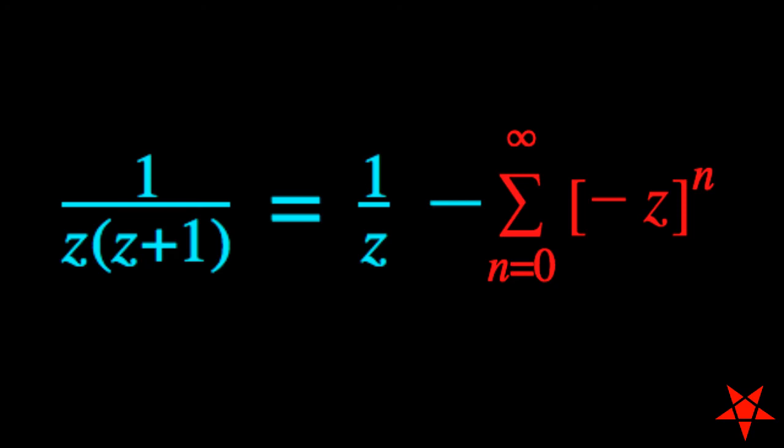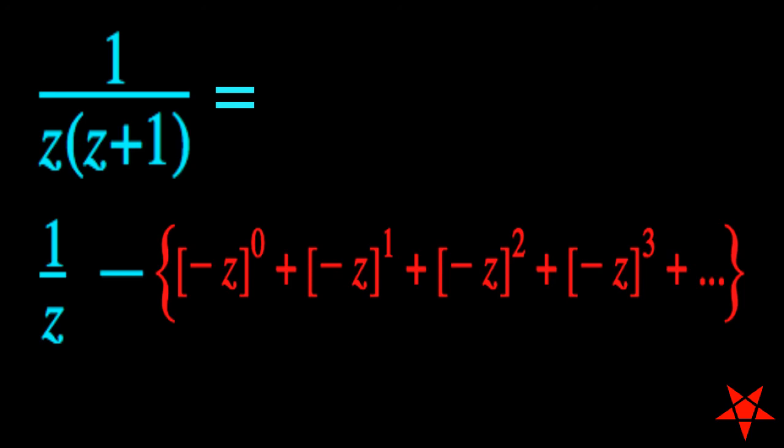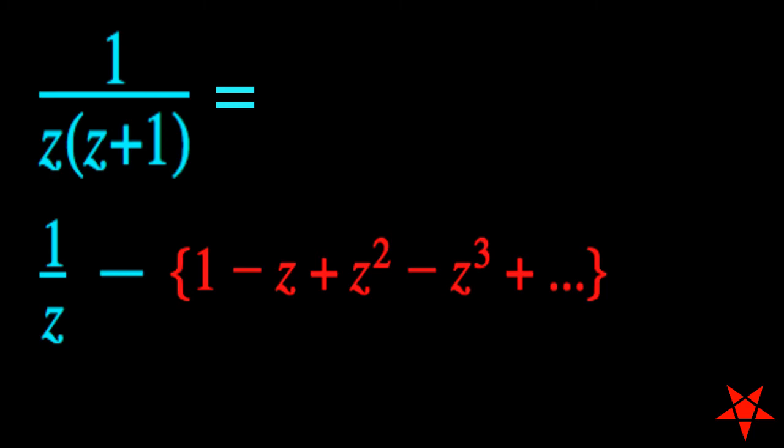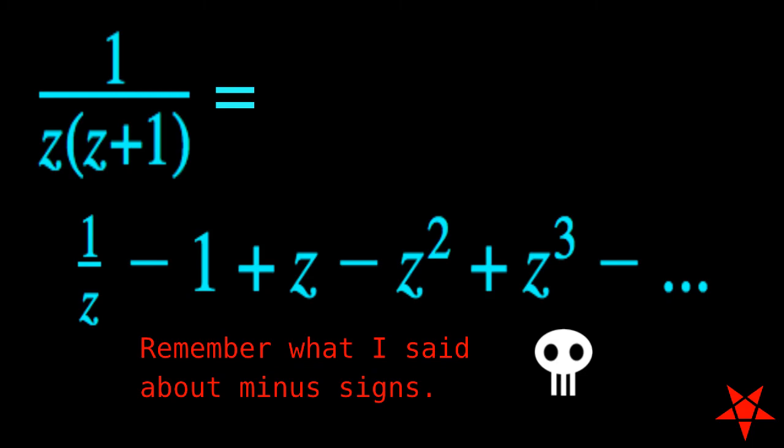Expanding this out, we see that the components match the form of a Laurent series centered at z0 equal to 0 and that it is continuous for absolute values of z between 0 and 1, non-inclusive.